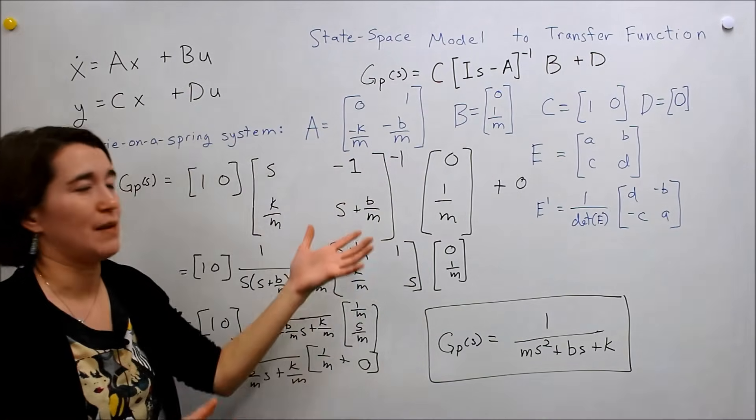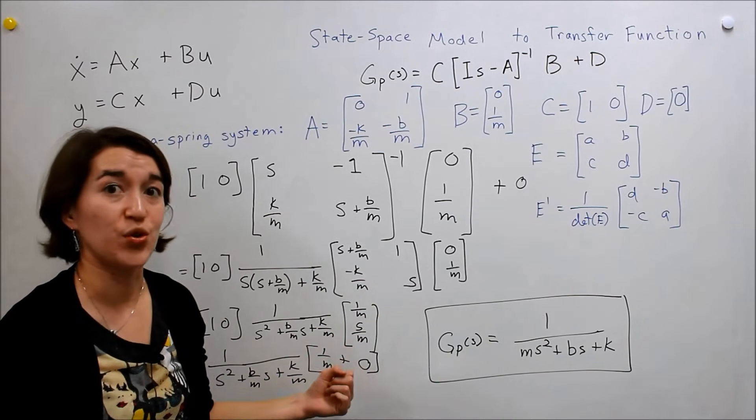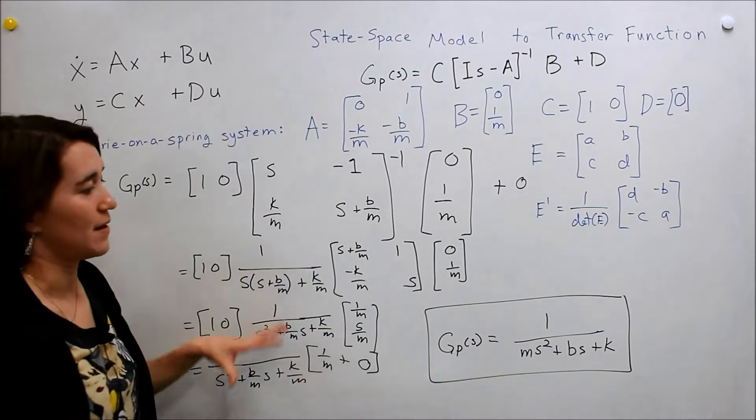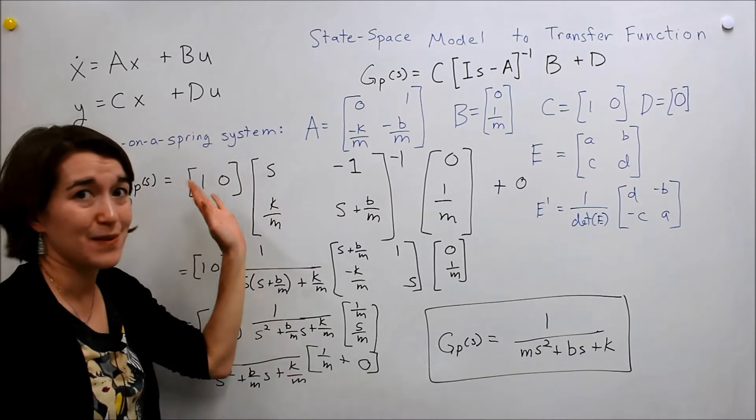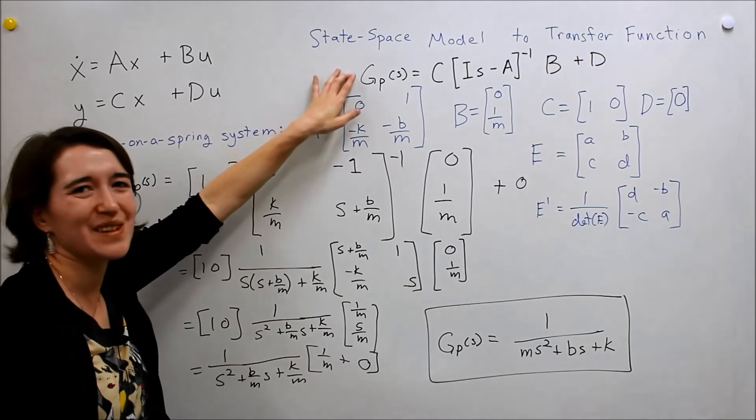Probably the most unfun part about doing this transformation is doing this inverse. If you get a very large A matrix, it's best to use MATLAB rather than trying to do it by hand. But with this one, two by two, it's usually not too bad. So we're able to take the state space. If you don't like state space for some reason and you want the transfer function, then you can transform it using this equation.